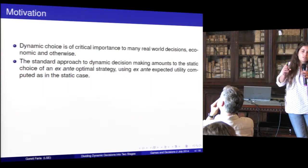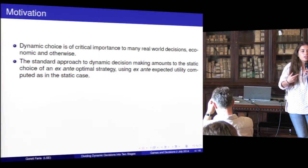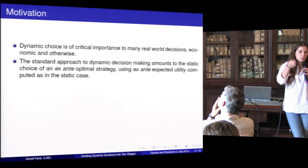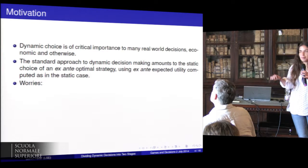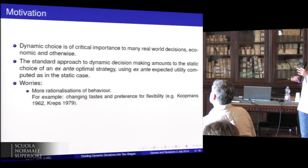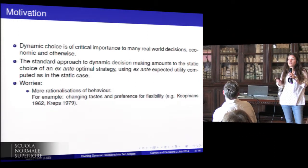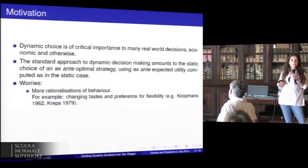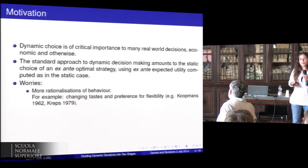However, the standard approach to dynamic decision-making is actually to use the static choice of an ex-ante optimal strategy using expected utility computed as in the static case. Usually that's how it's approached — we equate dynamic decision as if it was a strategy. We can think of it as: I'm going on holiday, so I tell my friend this is what you have to do in all eventualities. So I actually look at it as a strategy. And this is problematic, I think, mainly because of two things.